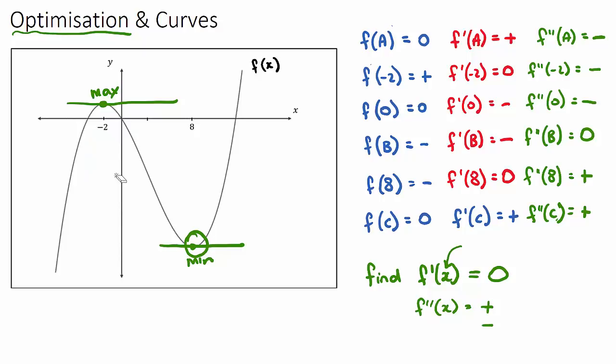These questions do take practice. The goal of this video was for you to understand the difference between f, f', and f''. If you want to optimize anything, get an equation, differentiate it, and make it equal to zero to find the maximum and minimum spots. You can then use the second derivative to test whether it is a minimum or a maximum. I encourage you to practice a few questions — good luck.